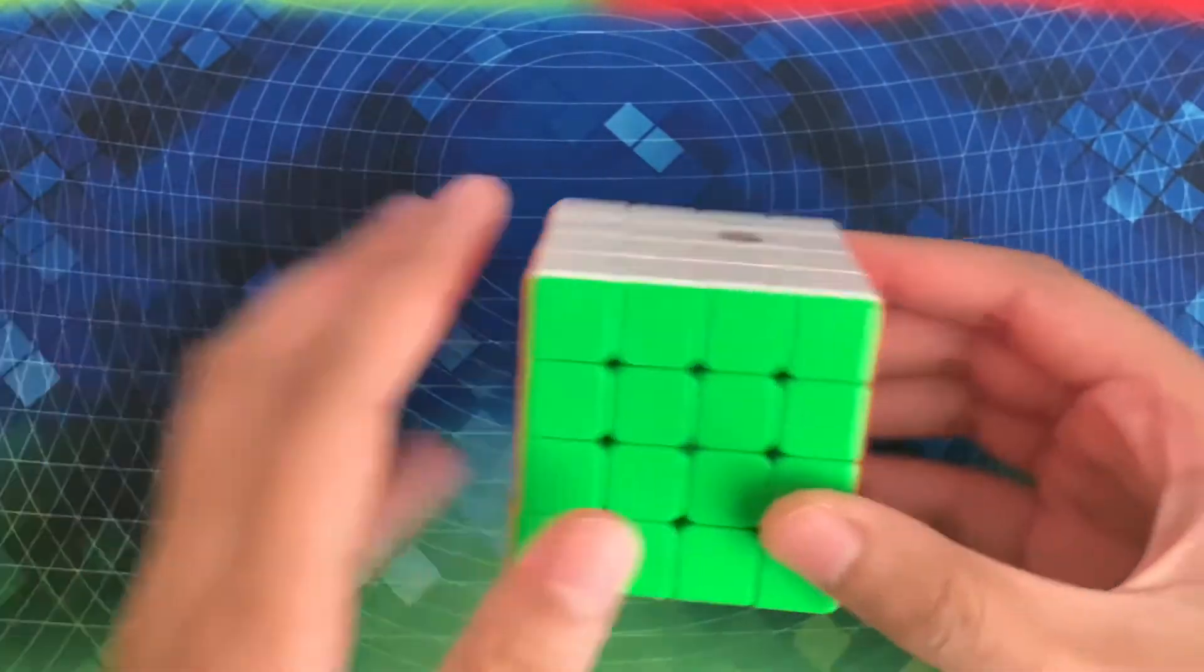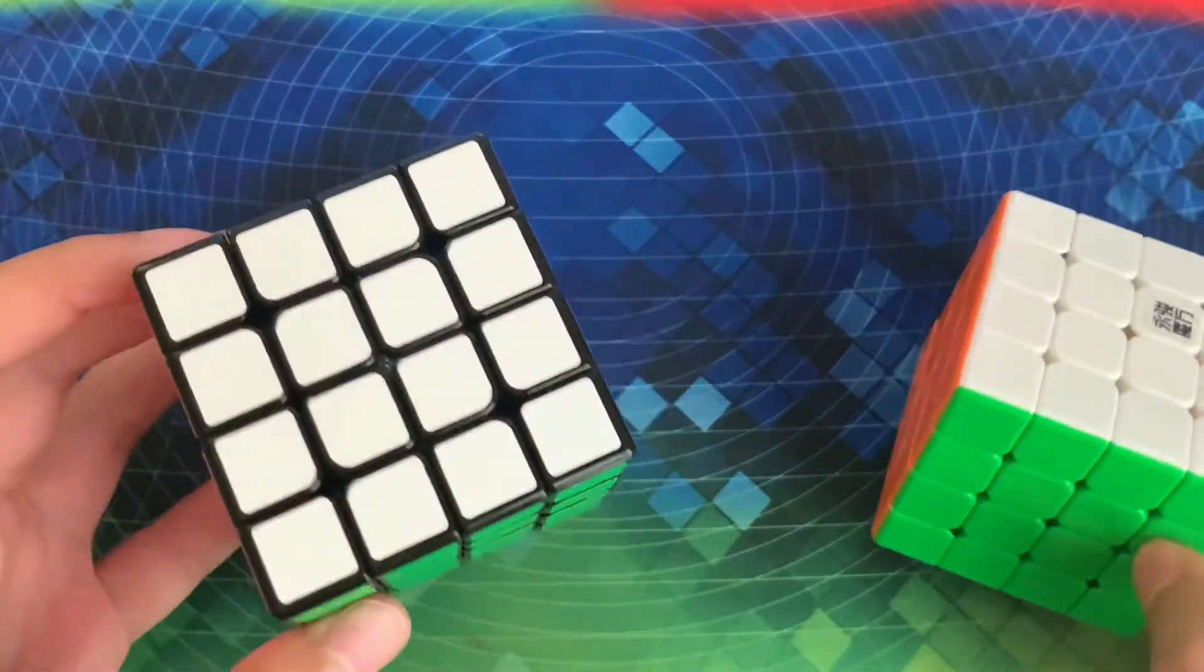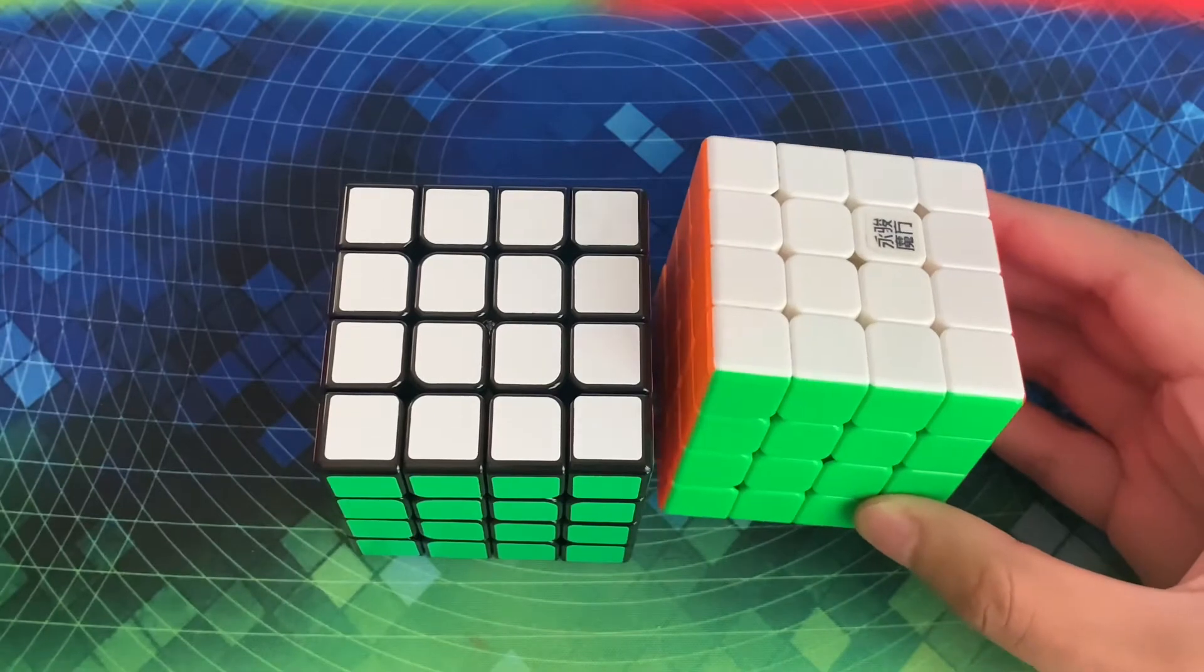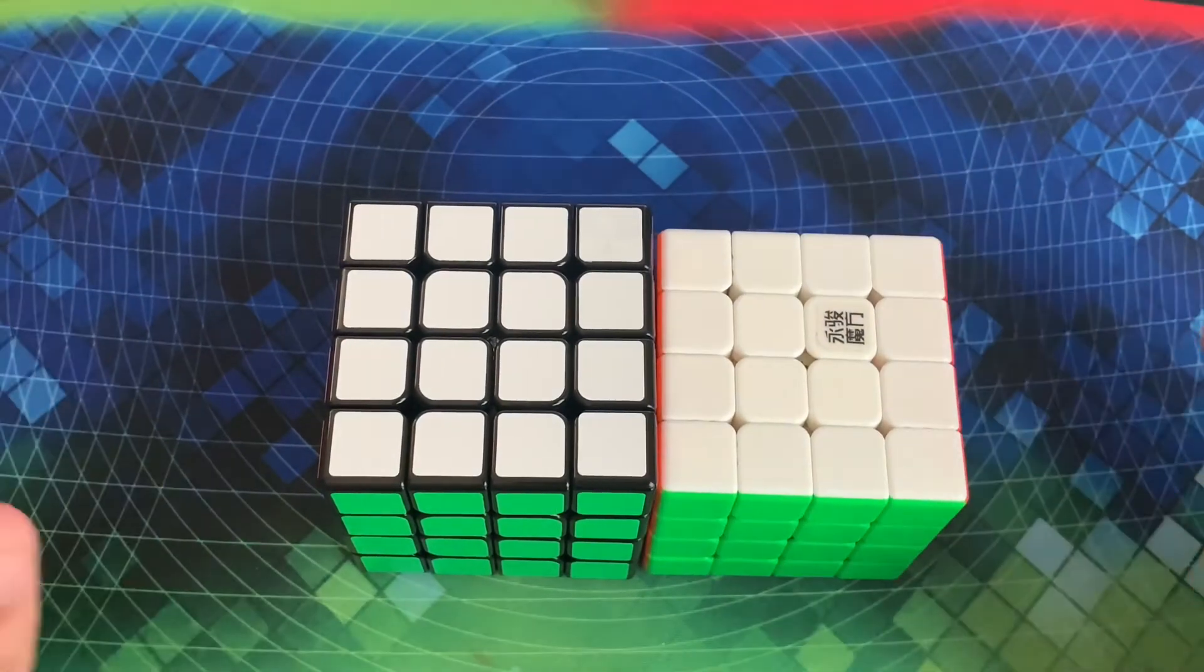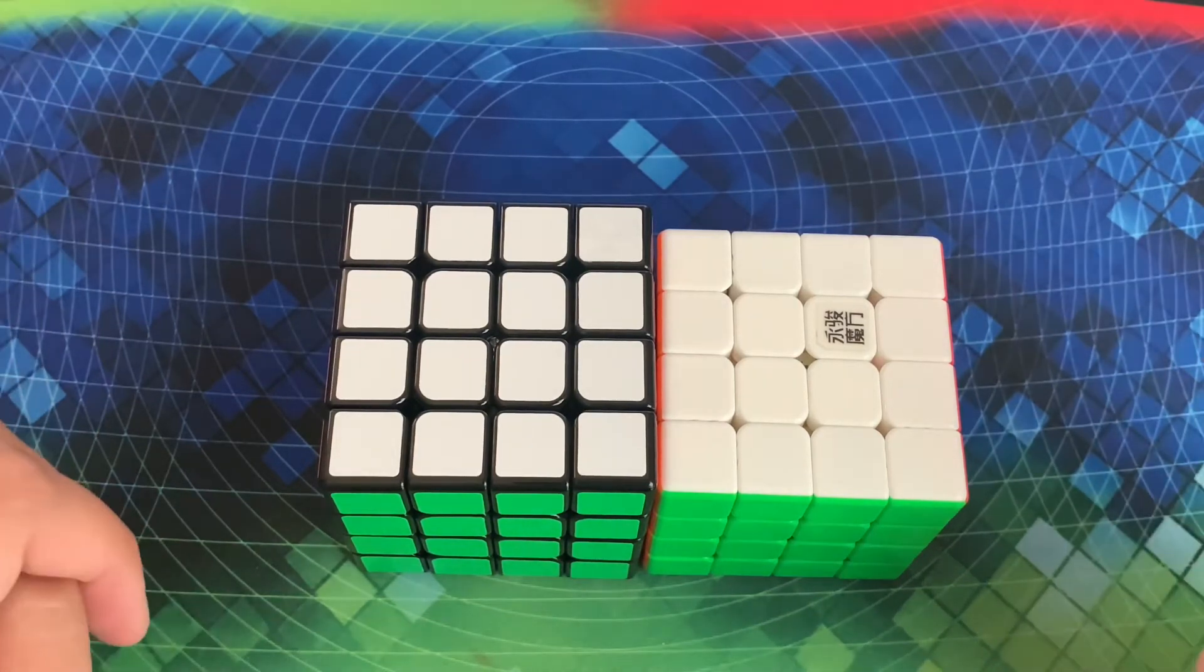Moving on to 4x4, my main is the YJ Zilong 4x4, and my backup is the MGC. My goal is to get two sub-1 singles and then a sub-1:05 average. I'm actually really excited for 4x4, and I've been practicing a lot, so if I get a sub-1 average, I'll be really happy.